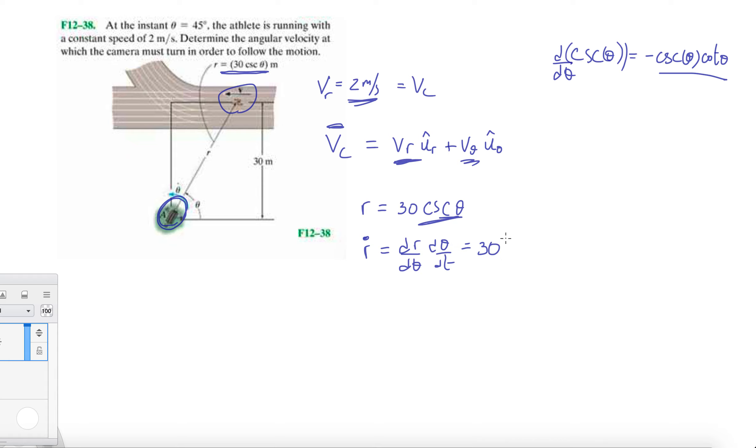So we're gonna have 30 times the derivative of this with respect to theta, which we just calculated: minus cosecant theta cotangent theta, times dθ/dt, which is theta dot. I don't have any information on theta dot - that's what we're looking for. This is the angular velocity at which the camera must turn to follow the motion, so this is our variable.